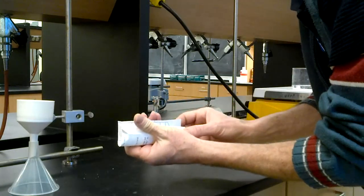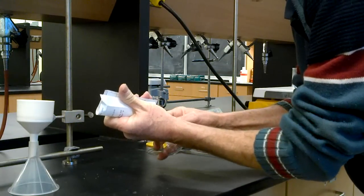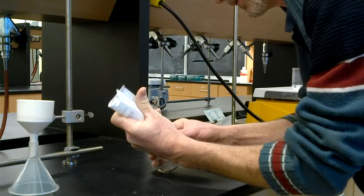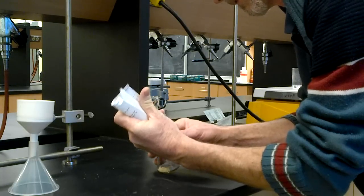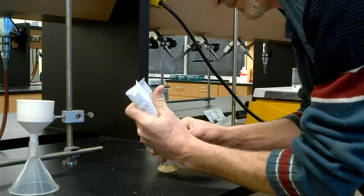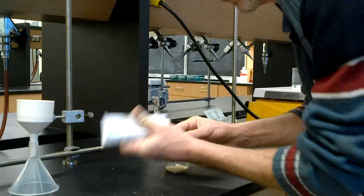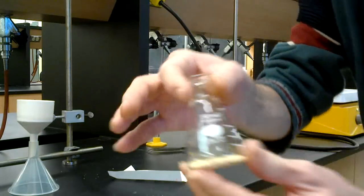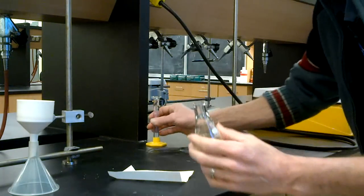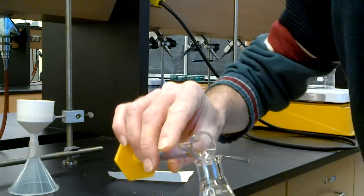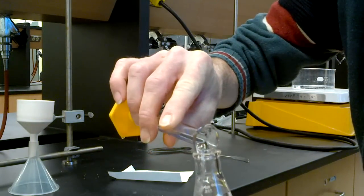And I can just make a nice tube here, slide it into the Erlenmeyer. There. 50 milliliter Erlenmeyer, and we'll start with 10 milliliters of methanol.